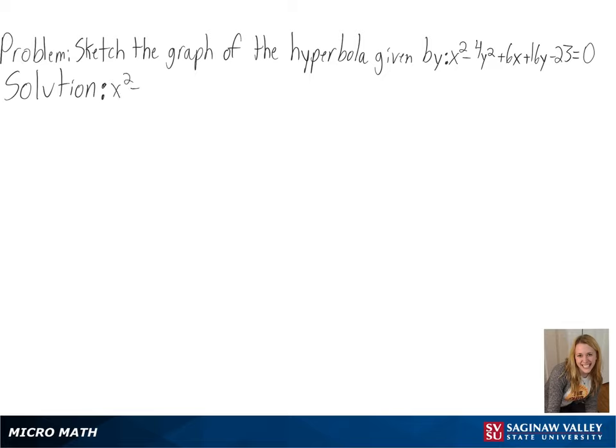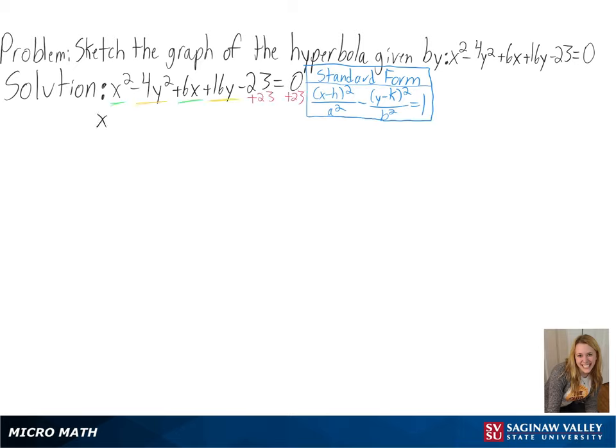Our problem is to sketch the graph of the hyperbola given by x² - 4y² + 6x + 16y - 23 = 0.